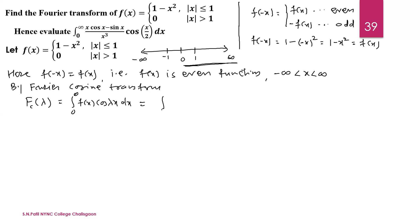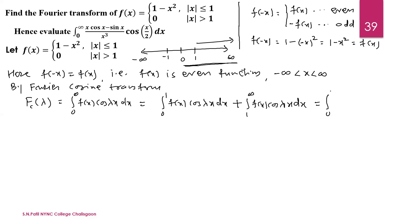We use the cosine transform because the function is even, so we evaluate the integral over 0 to infinity. From the given problem, this splits into two parts: 0 to 1 and 1 to infinity. The first part is the integral from 0 to 1 of f(x) cos(λx) dx. When x lies between 1 to infinity, the value of f(x) is 0, so that integral becomes 0. Simply the integral of (1 - x²)cos(λx) dx from 0 to 1 remains.